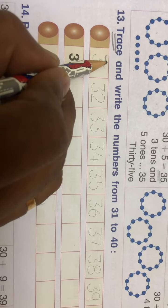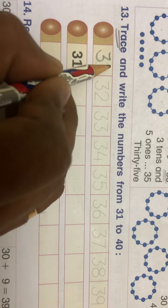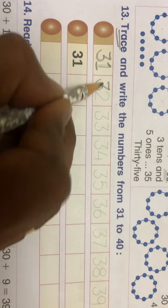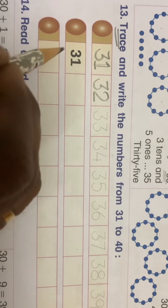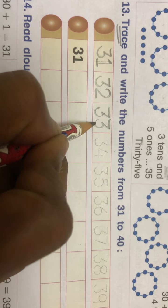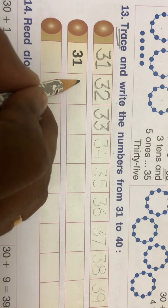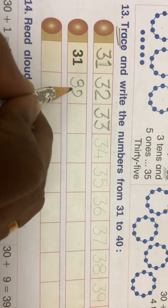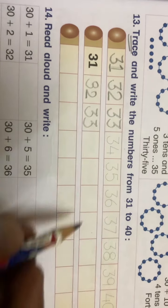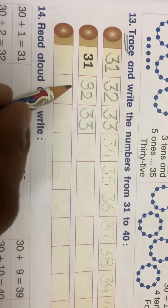Here you will trace: three one - thirty-one, three two - thirty-two, three three - thirty-three. And then you will write here: 32, 33. Write it two times.